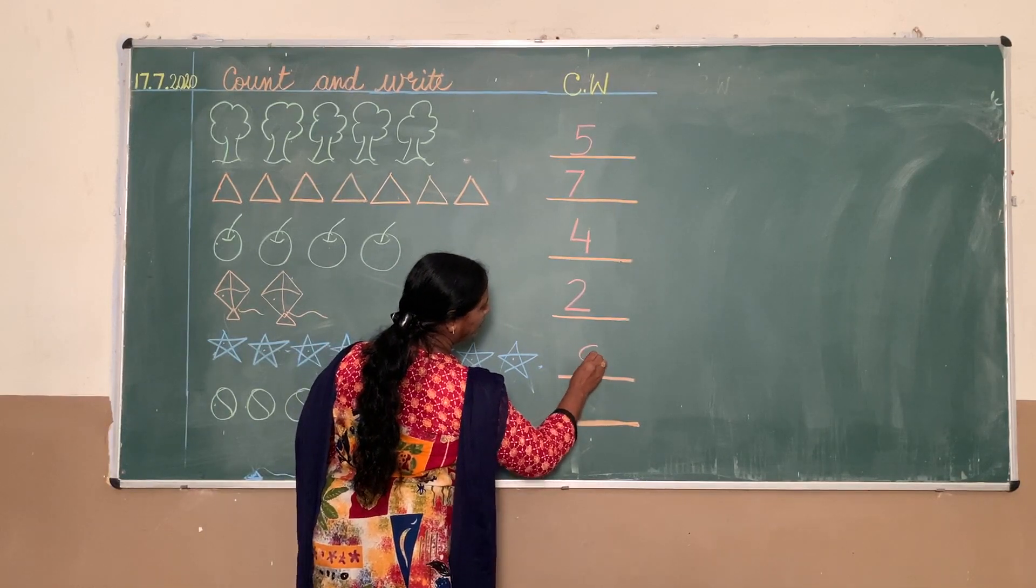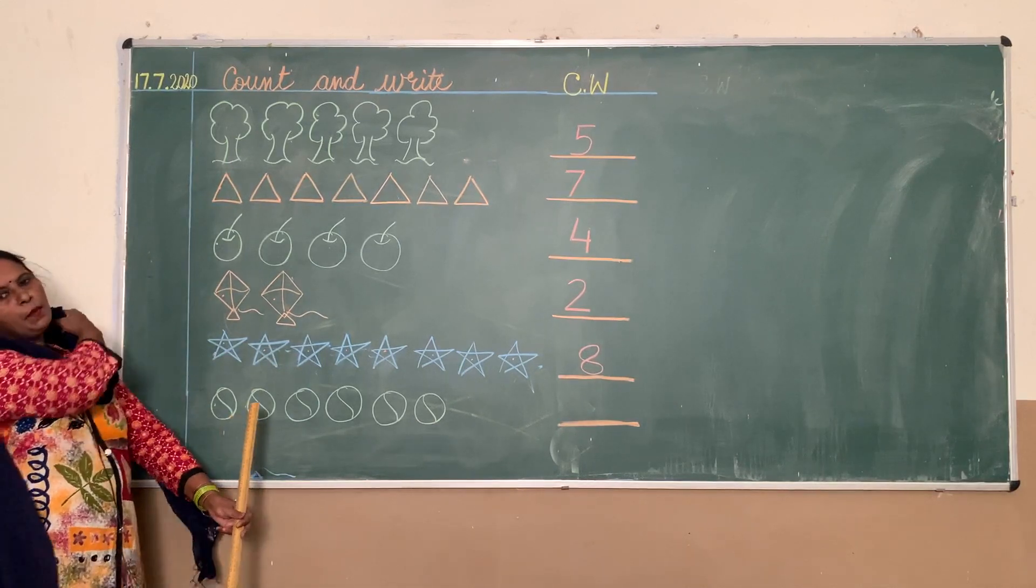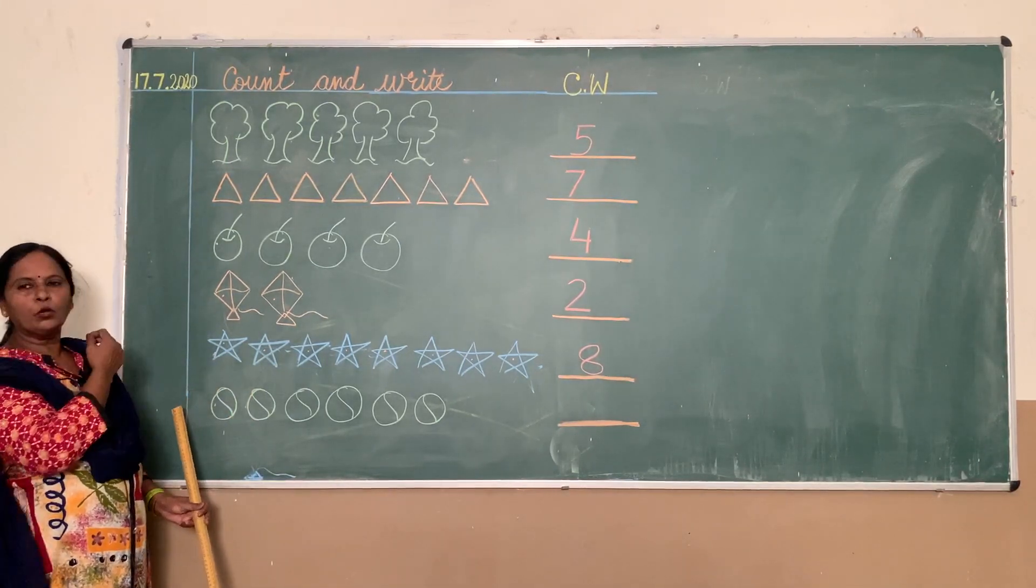Now what are these? These are balls. Again, you count the balls. One, two, three, four, five, six. So we will write six here. There are six balls.